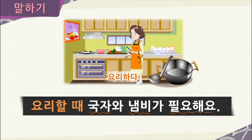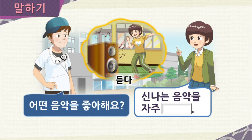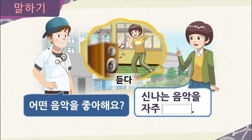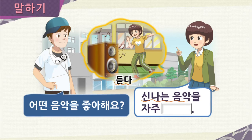Now let's practice ㄷ irregular verbs. Jimin's friend asks her: 어떤 음악을 좋아해요? — what kind of music do you like? Jimin likes 신나는 음악, and she often listens — 듣다. So how would Jimin respond? She would say: 신나는 음악을 자주 들어요 — I often listen to exciting music.